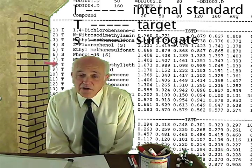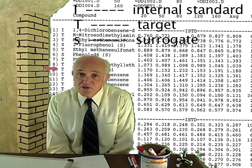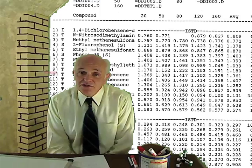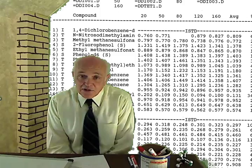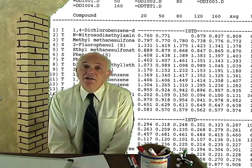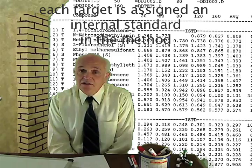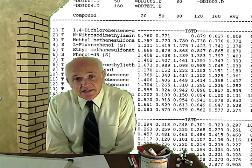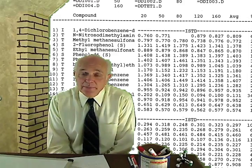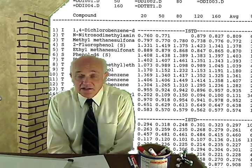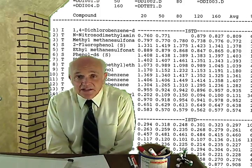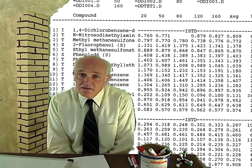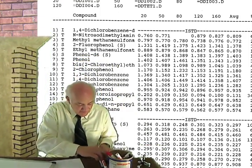The method for the 8270 consists of 70 peaks identified in the method, located to their approximate position on the chromatogram, along with six internal standards also named and located. The method requires five calibration points at 20, 50, 80, 120, and 160. The operator makes a standard at each concentration — the 20 standard is 20 of everything, including the surrogates — and all five samples are analyzed as standards.